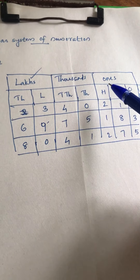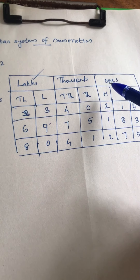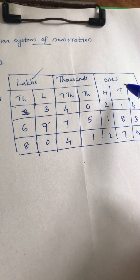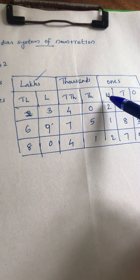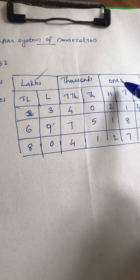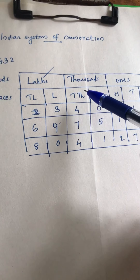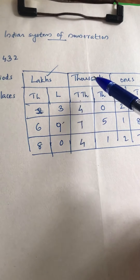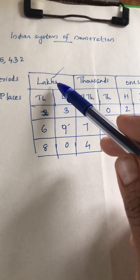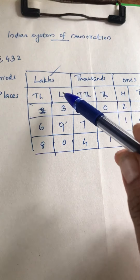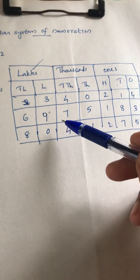In the Indian system, we also have periods. The first three places — ones, tens, and hundreds — together form one period. Next, thousands and ten thousands make the thousands period. Lakhs and ten lakhs make the lakhs period. So, how do we read numbers using this Indian system?